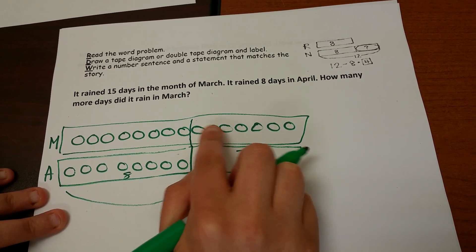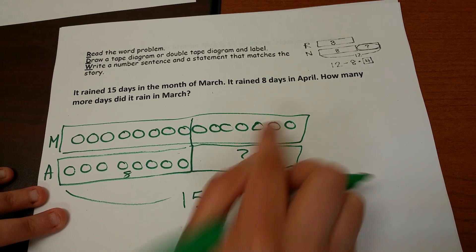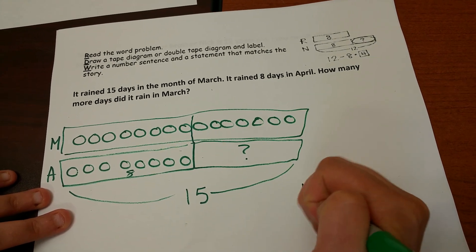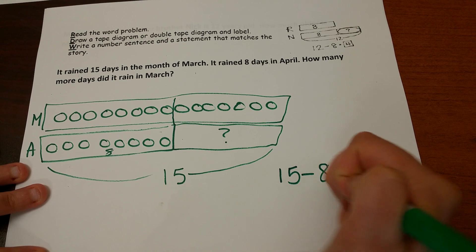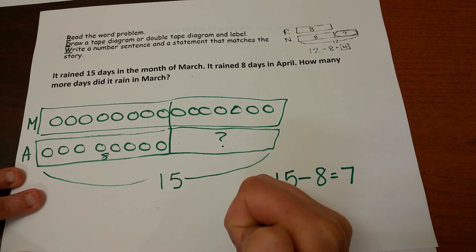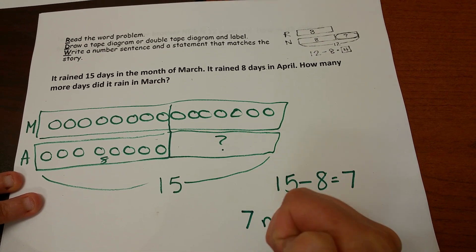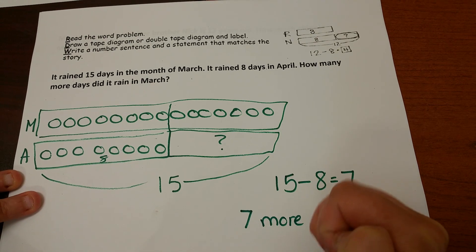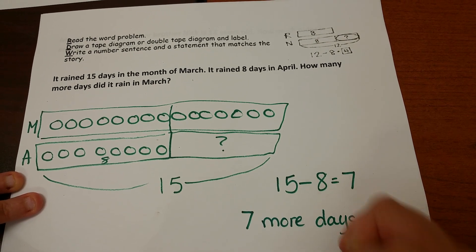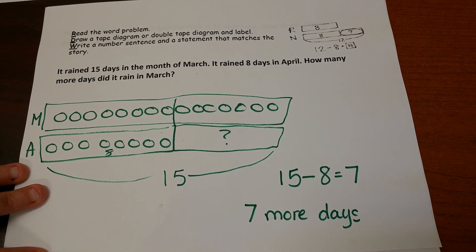So if this is the 8, I'll need 1, 2, 3, 4, 5, 6, 7. 15 minus 8 equals 7. There are 7 more days in March.